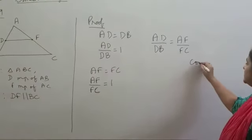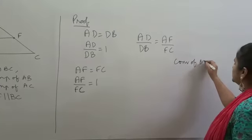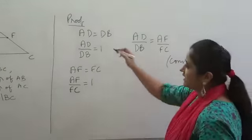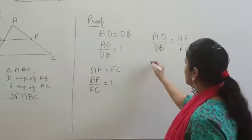So, then what are you doing? You're using the converse of BPT. So, by the converse of BPT, in triangle ABC, we have DF parallel to BC. And that's what we have to prove.